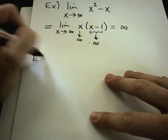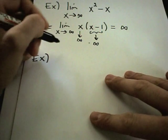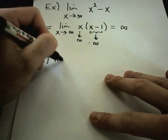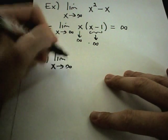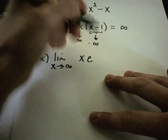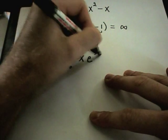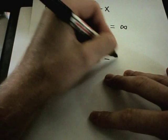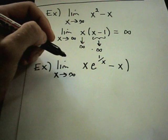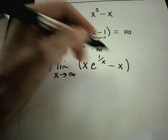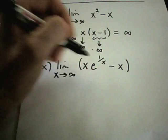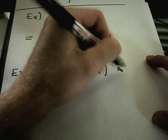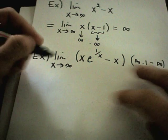Let's do another one — maybe one that's not so easy. Suppose we have the limit as x goes to infinity of x times e to the 1 over x, minus x. Certainly the x's are going to infinity. The 1 over x is going to 0 as x goes to infinity, so really this is like having infinity times 1 minus infinity — the indeterminate form infinity minus infinity.